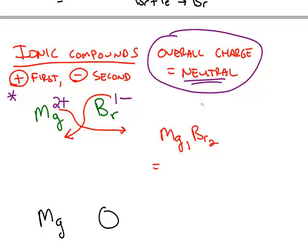A subscript of 1 is not written so we rewrite the formula as just Mg and then Br subscript 2. So this would be a neutral ionic compound.